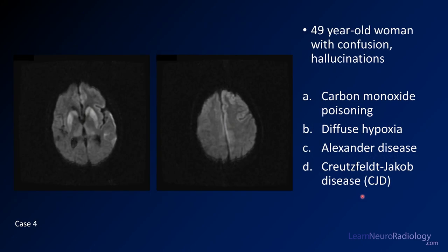Case four is a 49-year-old woman with confusion and hallucinations. We have two diffusion-weighted images — one through the basal ganglia and one through the centrum semiovale. Your choices are carbon monoxide poisoning, diffuse hypoxia, Alexander disease, or Creutzfeldt-Jakob disease (CJD).